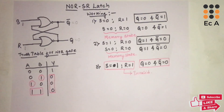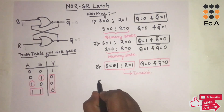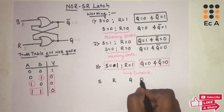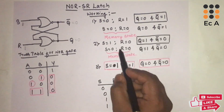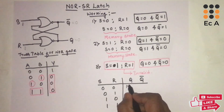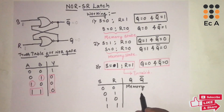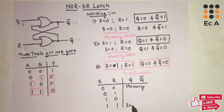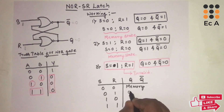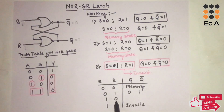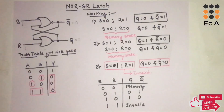Now we can write the complete truth table for the SR latch with columns S, R, Q, and Q-bar. For S=0, R=0 we get the memory state — the latch holds its previous output. For S=0, R=1 we get Q=0 and Q-bar=1. For S=1, R=0 we get Q=1 and Q-bar=0. For S=1, R=1 it is the invalid state. Hope you have understood this topic. Thank you.